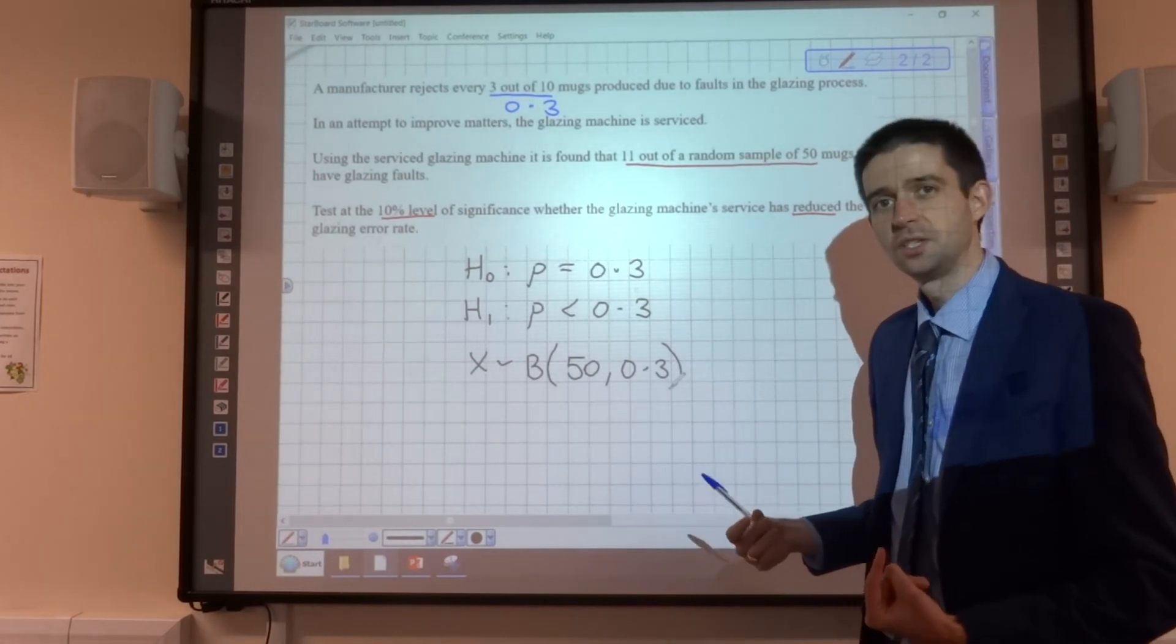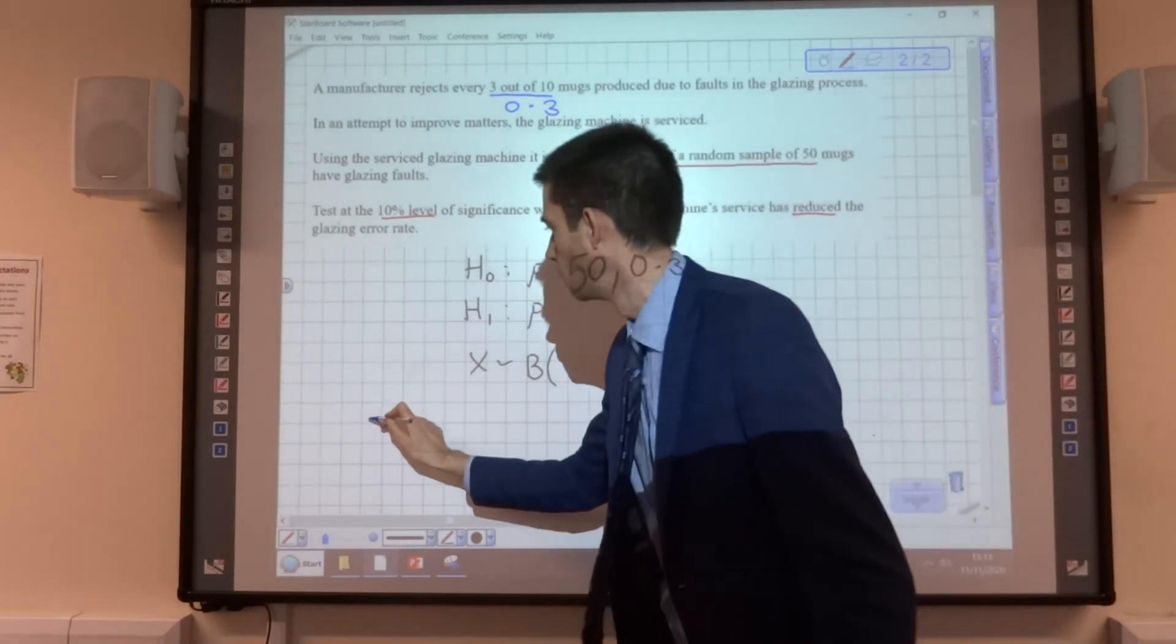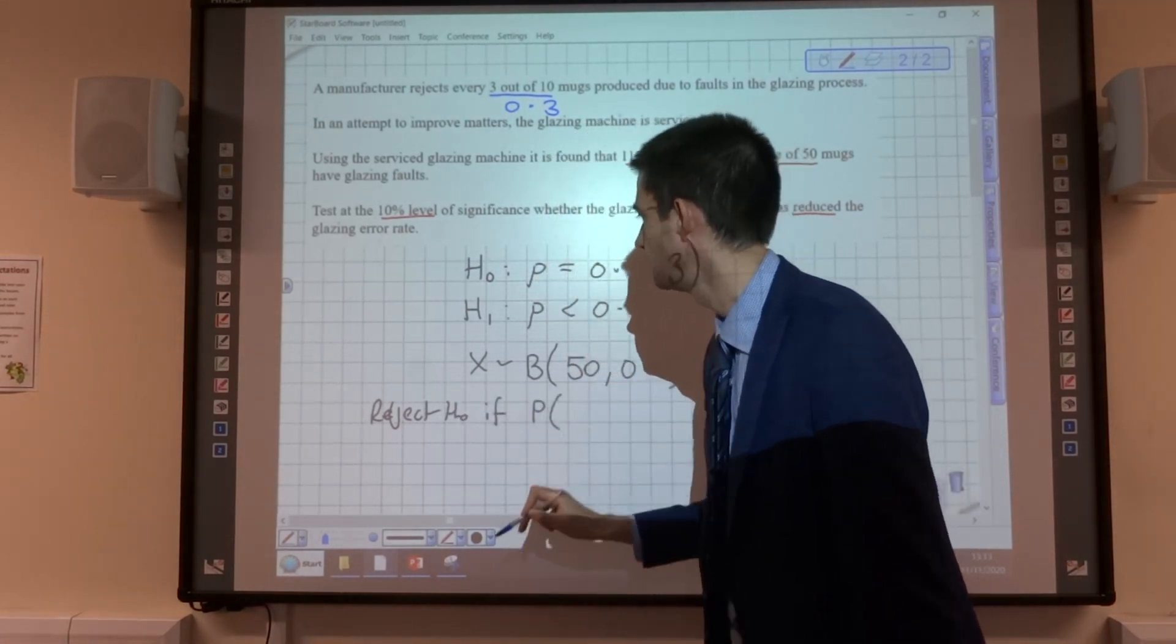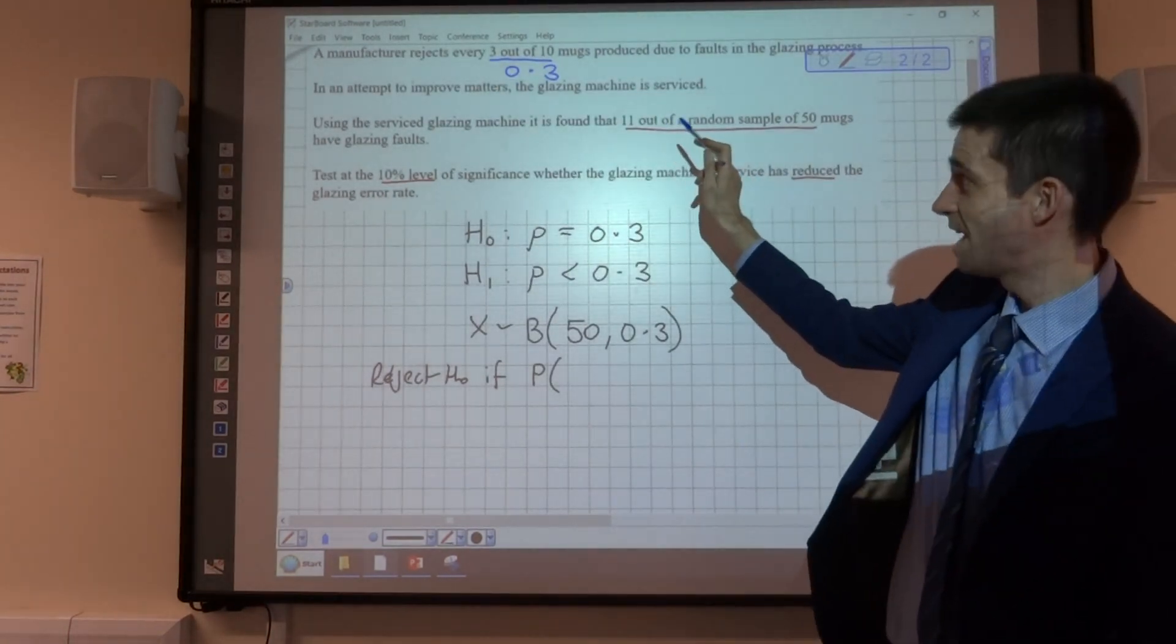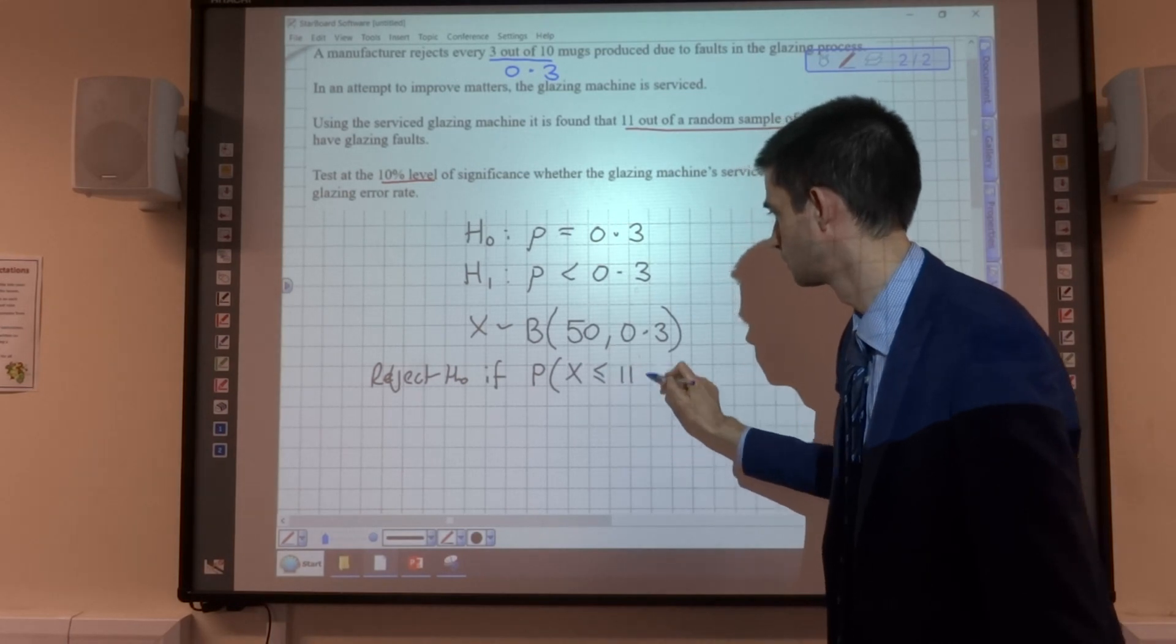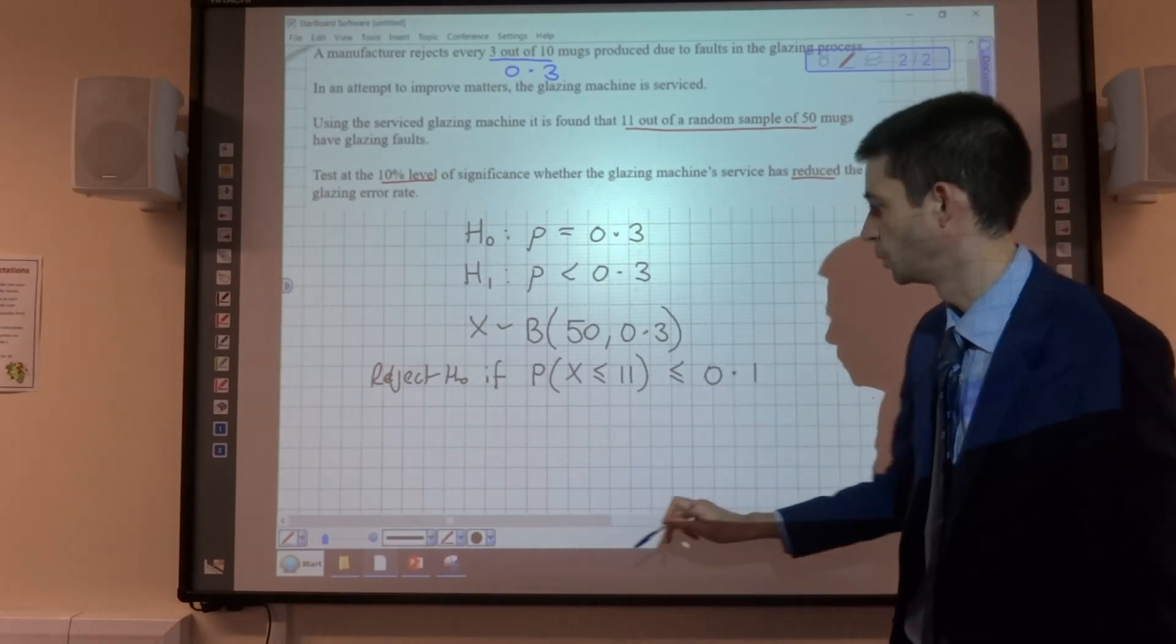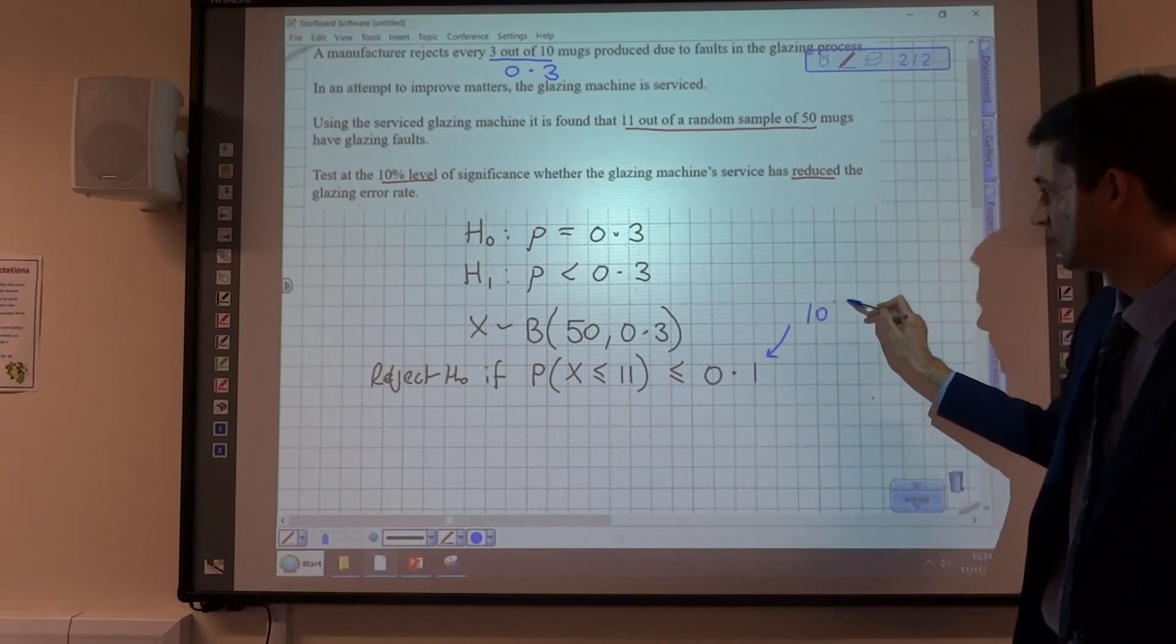what are the circumstances under which we would reject H₀? Well, we would reject H₀ if the probability of 11 or fewer mugs having glazing faults is less than or equal to 0.1, which is our 10% level of significance.